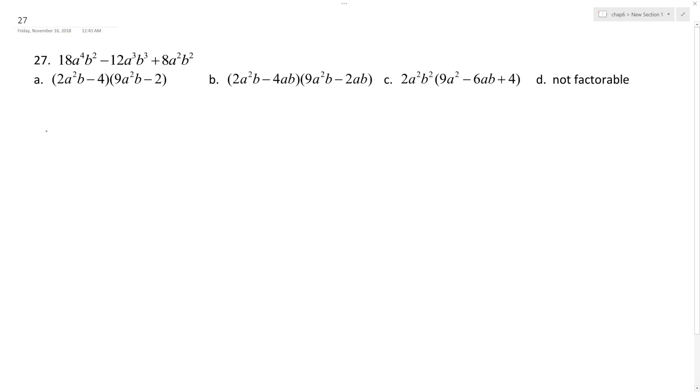So when I factor out, well, okay, 2 for the coefficient, and then the largest a I can get out of them is a², and the largest b looks like b².